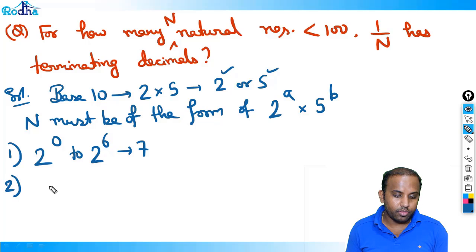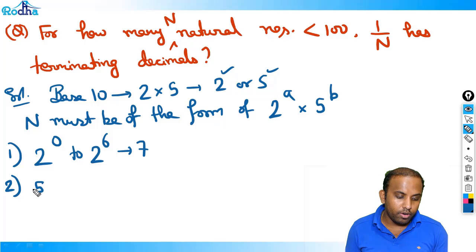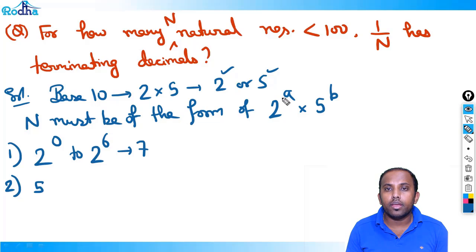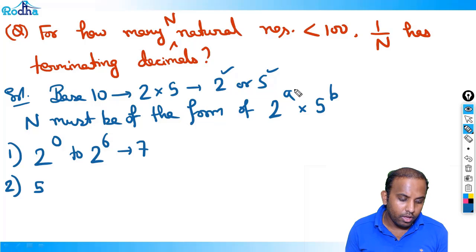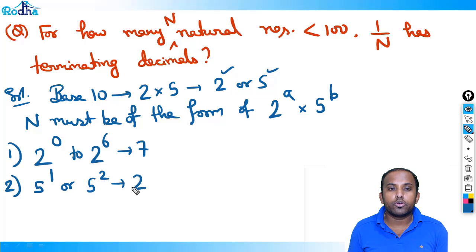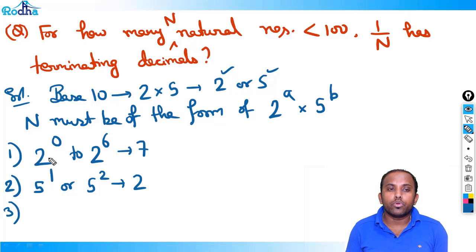Second, powers of 5: 5^1 and 5^2. That's 2 values. Note that 5^0 = 1 is already counted as 2^0. So we add 2 values for powers of 5.